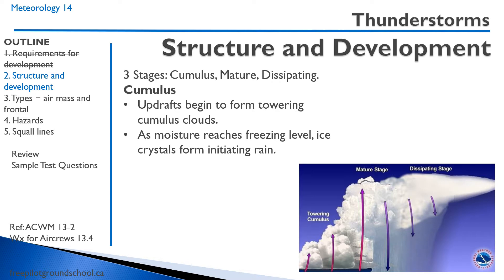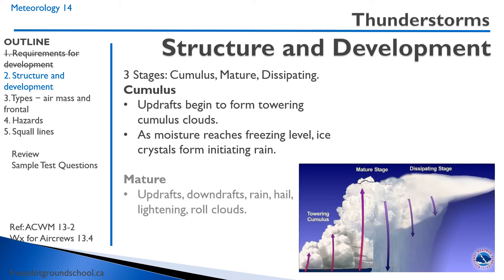There's moisture in the air as well. As the moisture reaches the freezing level, ice crystals form, initiating rain. The second stage of thunderstorm development is the mature stage. The mature stage features a cumulonimbus cloud with updrafts, downdrafts, rain, hail, lightning, and roll clouds.